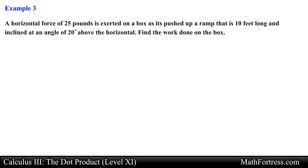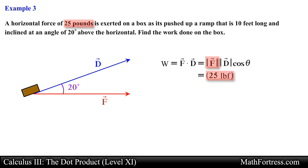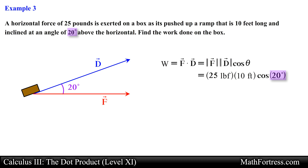A horizontal force of 25 pounds is exerted on a box as it is pushed up a ramp that is 10 feet long and inclined at an angle of 20 degrees above the horizontal. Find the work done on the box. Here we have a box being pushed up a ramp with a strictly horizontal force. Using the definition of work — multiplying the magnitude of the force, the magnitude of the displacement, and the cosine of the angle between the vectors — and simplifying, we obtain 235 foot-pounds.